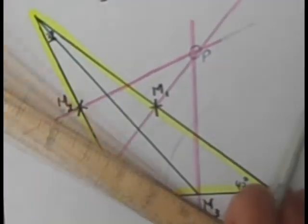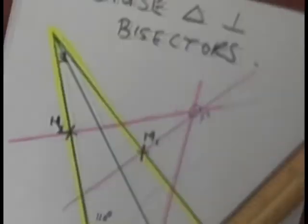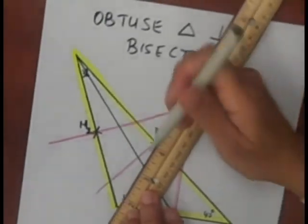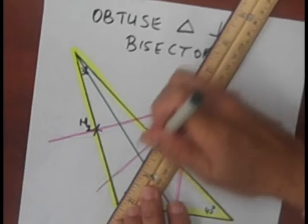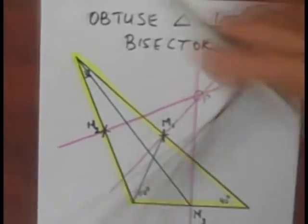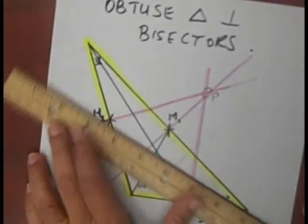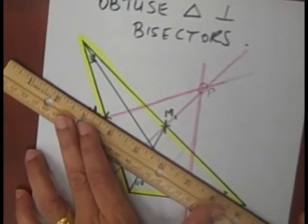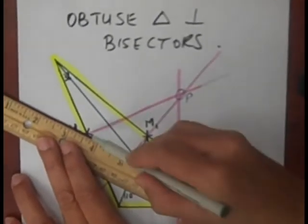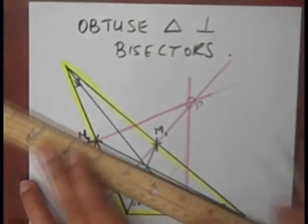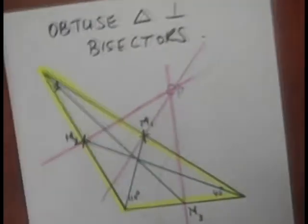Another midpoint. Go from the midpoint to the opposite vertex. And one last time from the midpoint to the opposite vertex. And this time I got lucky.